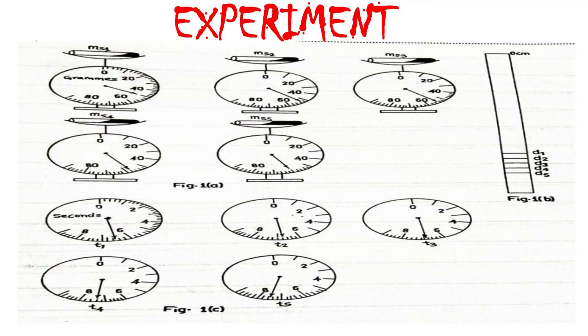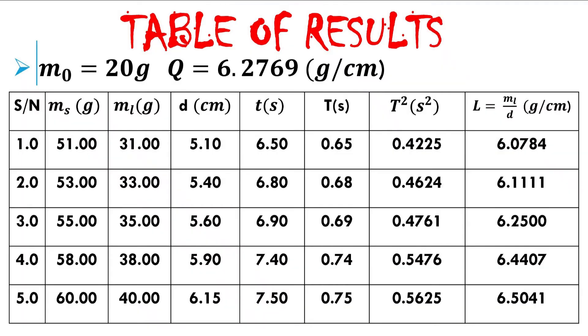Because we are expected to plot a graph of T squared on the horizontal axis, we need to find the period. Since we did 10 oscillations, divide the time read from the diagram by 10 to get the period T, then square that value to get T squared. We are also asked to evaluate L, which equals the mass of the lead shots divided by the depth. Just perform the division and record your answers.